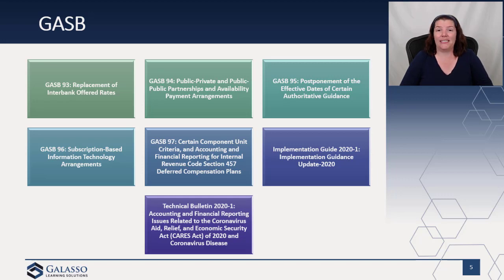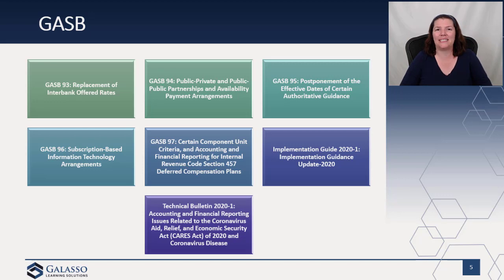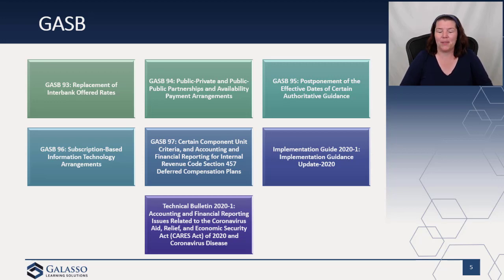GASB has some major projects on the horizon — revenue recognition, a new financial reporting model, and changes to disclosures and sales elements, so we're not expecting them to slow down anytime soon. They also issued the annual implementation guide, a set of questions and answers addressing the most frequently asked questions and helping with implementation of upcoming standards. And last but not least, COVID accounting — they issued a technical bulletin providing guidance on how to account for PPP loans, whether they're a special item, and guidance on revenue recognition for grants, eligibility requirements, and CARES Act funding generally. A very helpful guide I would definitely recommend reading.